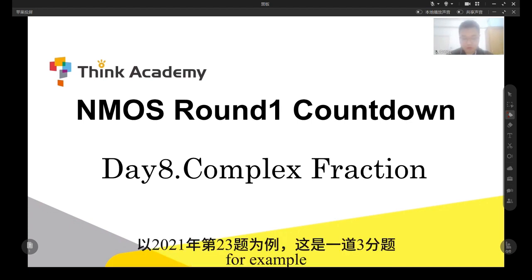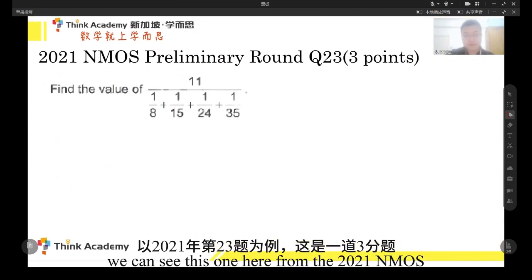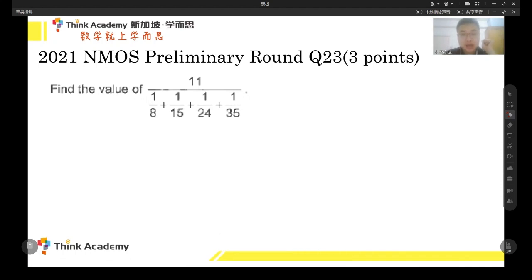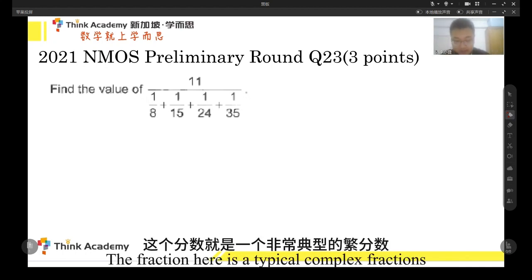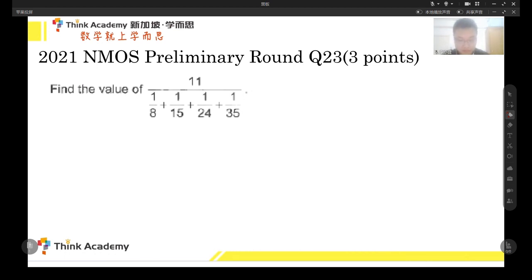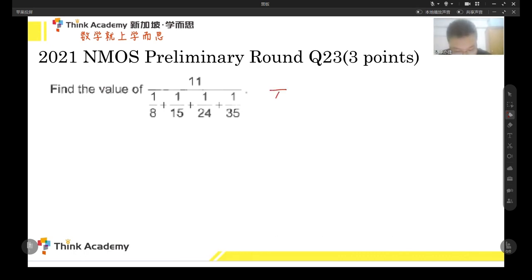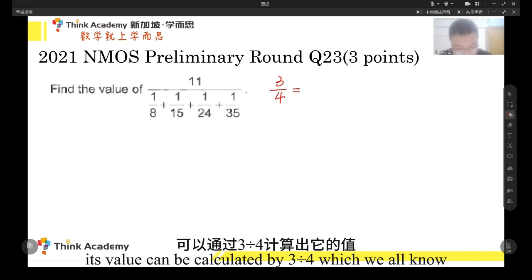For example, we can see this one from the 2021 NMOS paper, question 23 for three points. The fraction here is a typical complex fraction. But for every fraction, its value is calculated as maybe a simple one, for three fourths, right? Its value can be calculated by 3 divided by 4, which we all know.